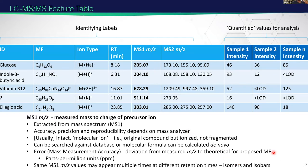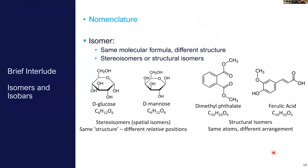We might detect the same mass-to-charge ratio multiple times in a run because of isomers and isobars. An isomer has the same molecular formula but a different structure — for example glucose and mannose are both hexoses with the same molecular formula, differing only in the orientation of hydroxyl groups. These will give very similar mass spectra but should be separatable on a column. We also have structural isomers like dimethyl phthalate and ferulic acid — one is a plasticizer and one is a key component in lignin biosynthesis — but they have the same molecular formula.